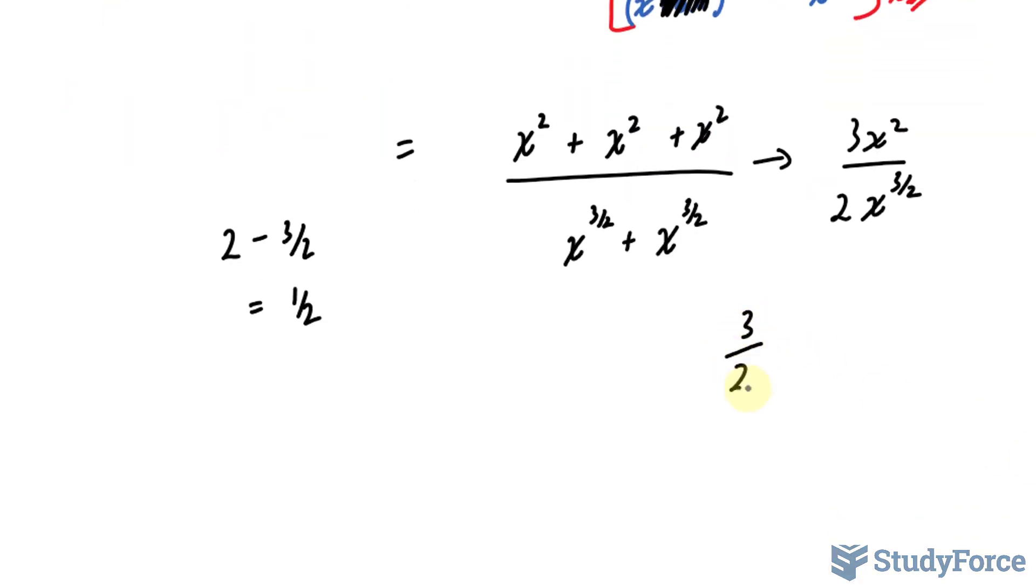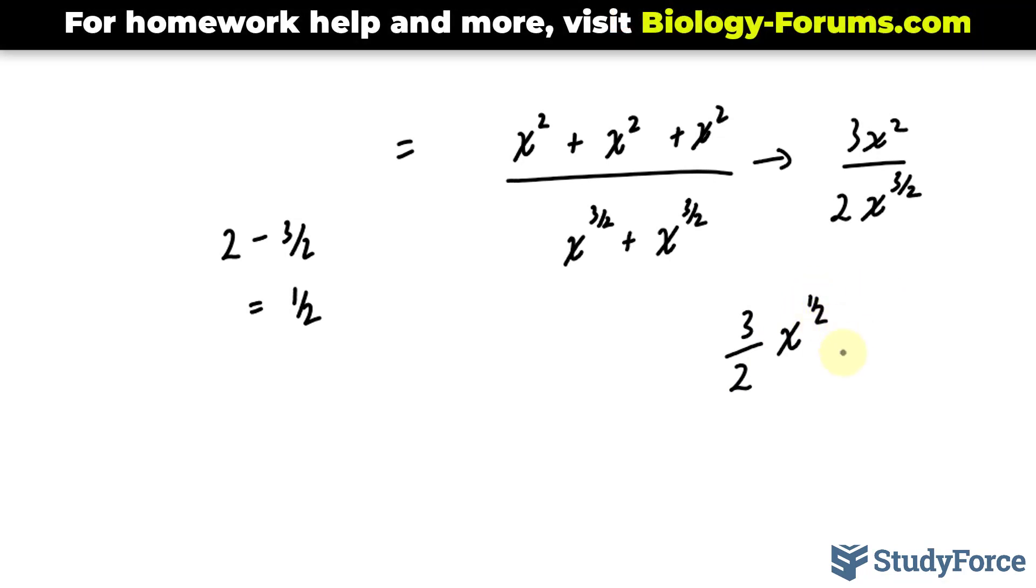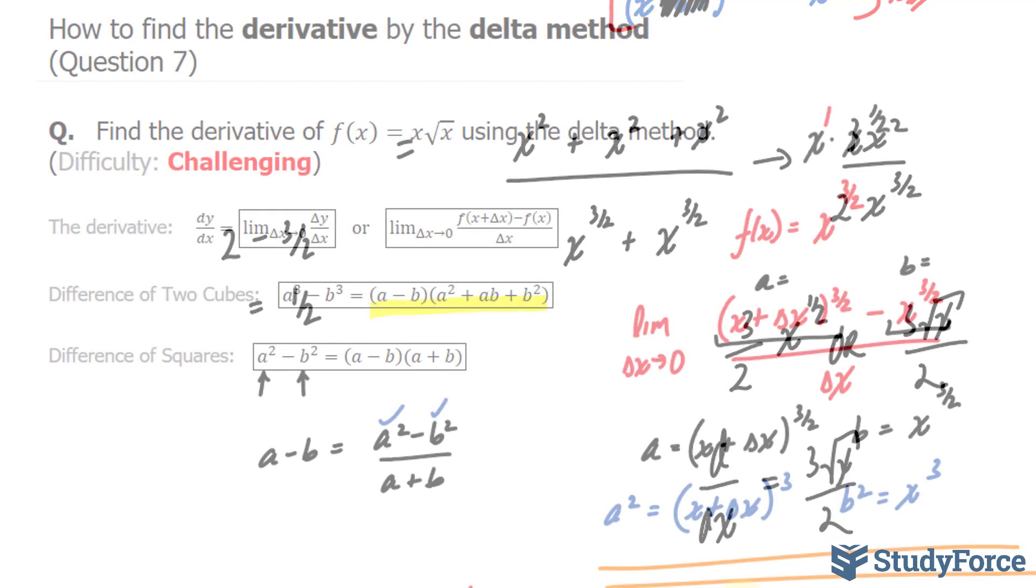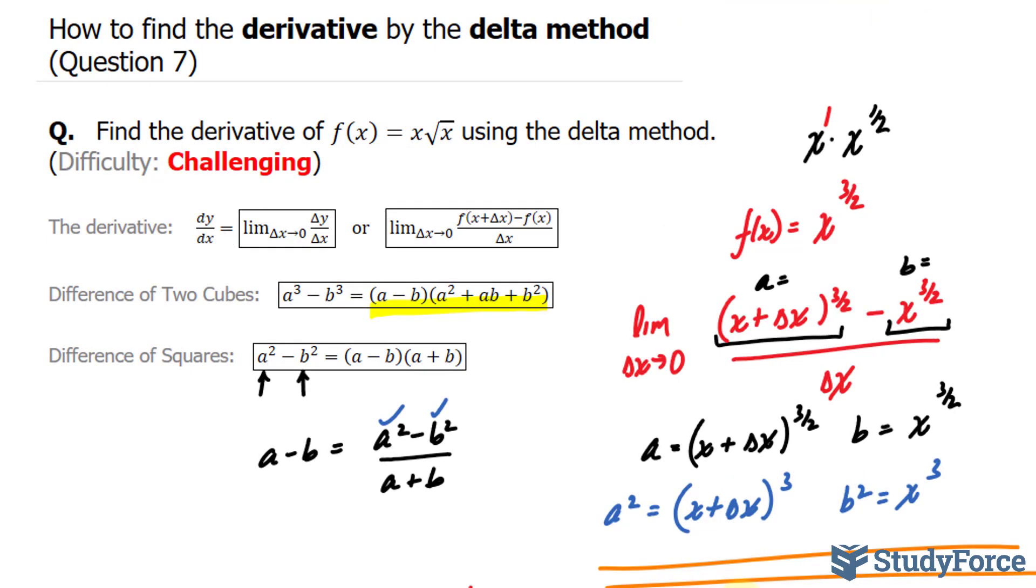So three over two times x to the power of half or three times the square root of x over two represents d over dx, the derivative of the function we started with. And there you have it. That is how to find the derivative by the delta method.